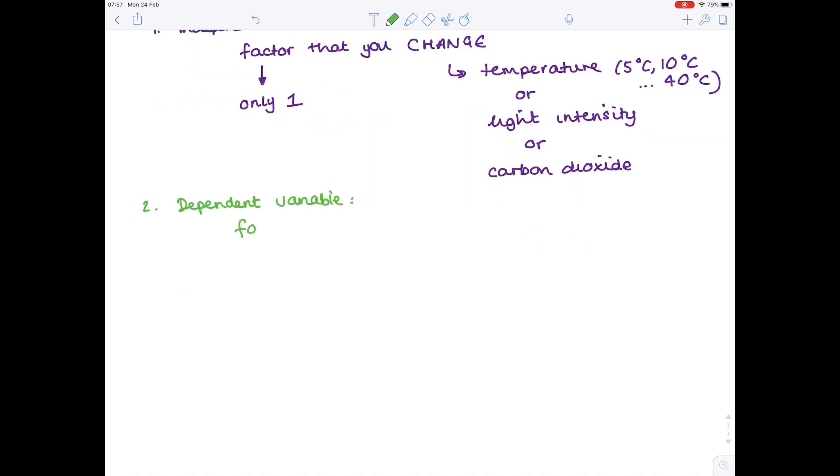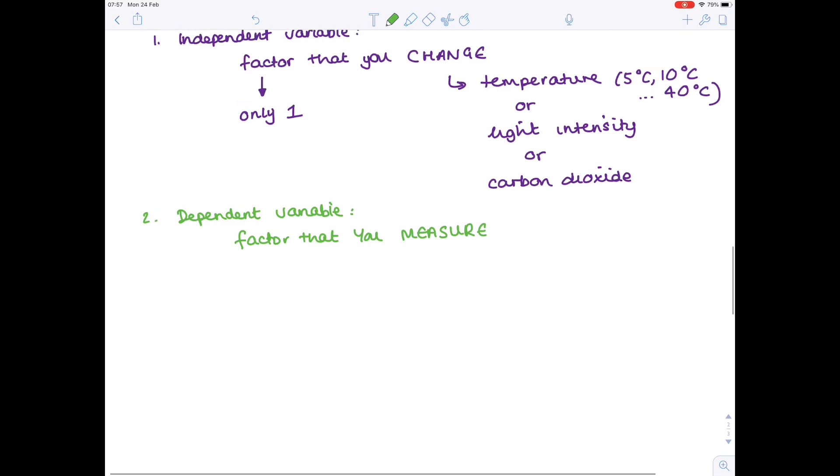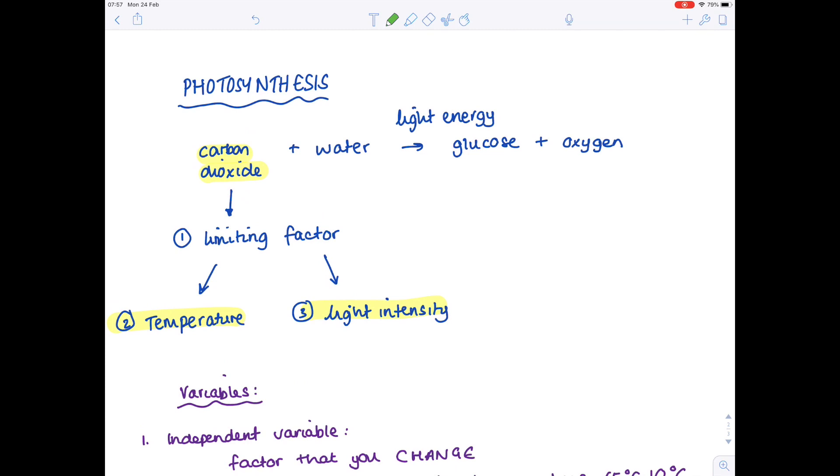Now this is the factor that you measure. And this needs to be something that you physically measure. So you can't just physically measure the rate of photosynthesis. So although we're interested in how temperature, light intensity or carbon dioxide affect photosynthesis, you can't just go and measure the rate of photosynthesis. But what you can do, if we look back at the equation, is look at what the products of photosynthesis are, which is glucose and oxygen.